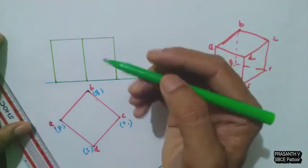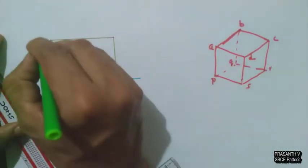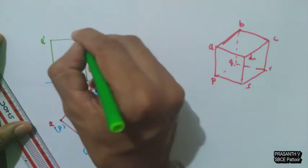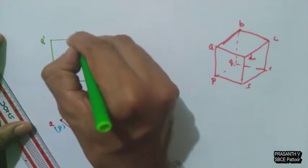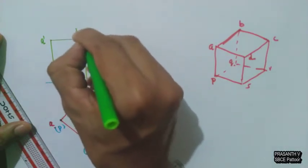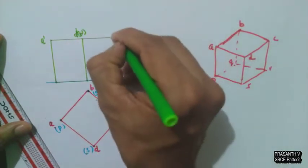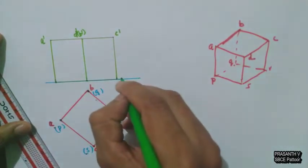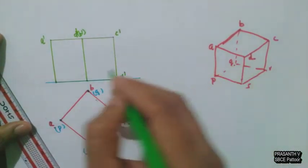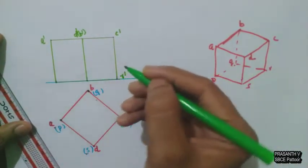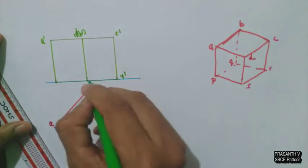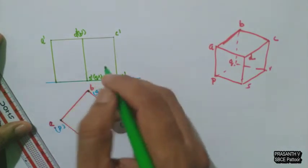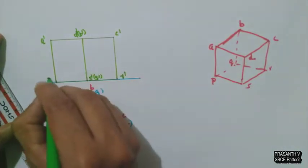Now name the front view points. This point is A dash, here it is D dash, and at the back B dash, this is C dash. The bottom faces are R dash, this is S dash, Q dash, and here it is P dash.